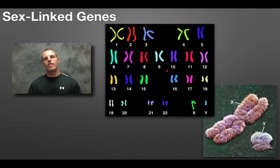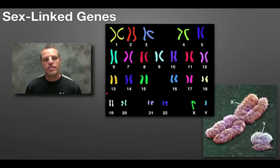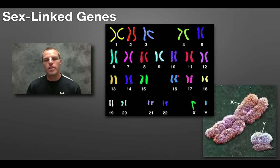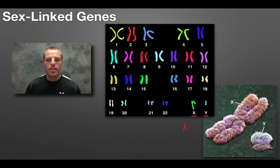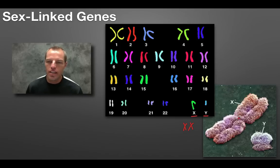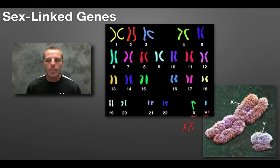The final type of non-Mendelian genetics I want to show you today is sex-linked genes, because our sex chromosomes are different. This is a karyotype — it shows all of our chromosomes. We have 23 pairs of chromosomes. This pair here, the X and the Y, are what we call the sex chromosomes. This is actually a karyotype for a male. Males always have an X and a Y, whereas females have two X chromosomes. The X chromosome is much larger than the Y, so there are more genes that ride on the X chromosome than on the Y.